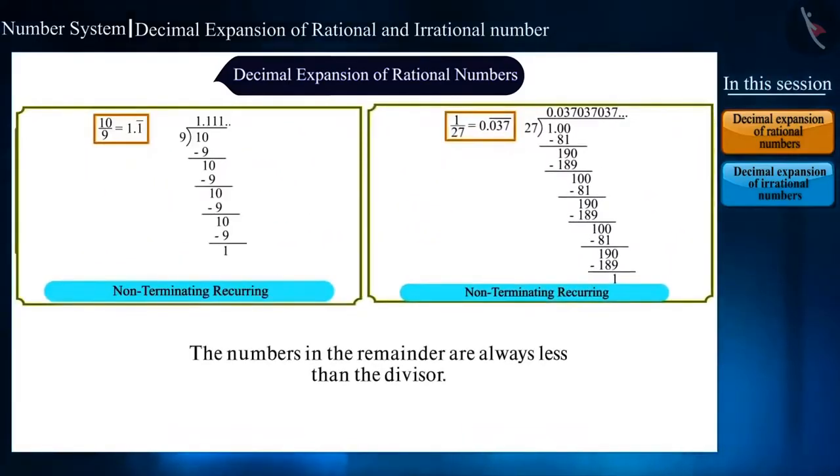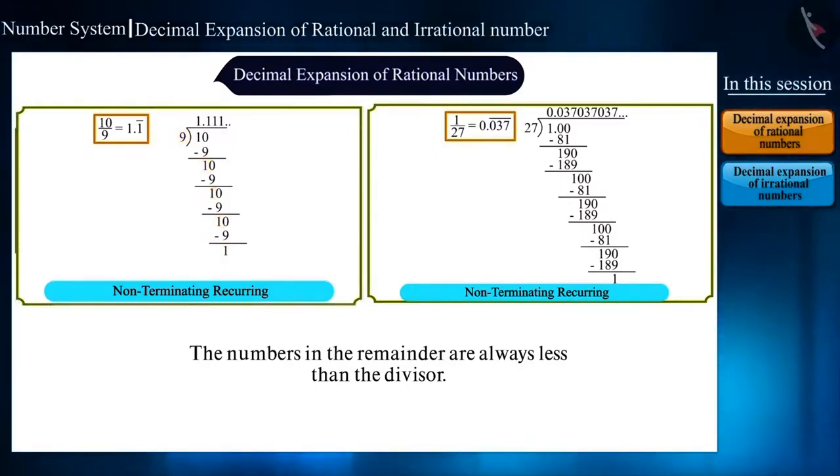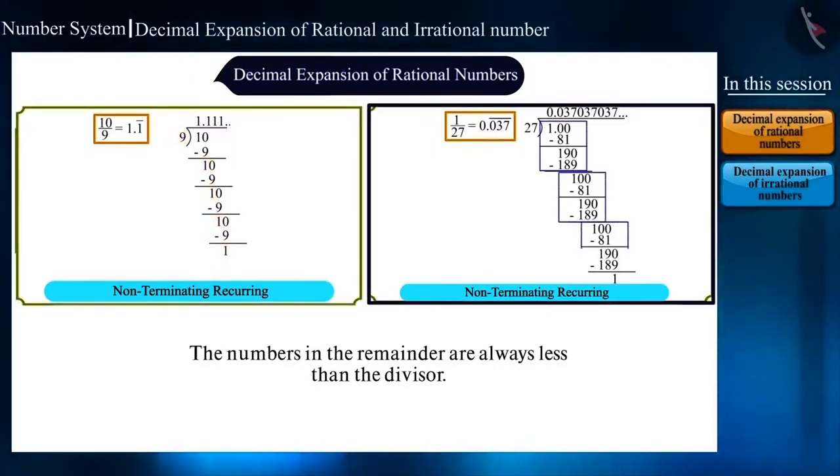The numbers in the remainder are always less than the divisor. Like in example 2, 1 is getting repeated and the divisor is 9. In case of example 3, there are three blocks of repetition and the divisor is 27.